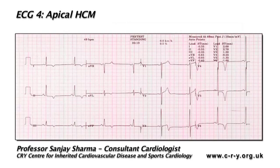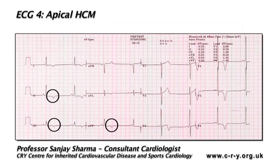This is an ECG of an individual who exercised but had complained of intermittent chest pain. You will recognise immediately that there is evidence of T-wave inversions in 2, 3, AVF, V3 to V6. I would like to draw your attention to the depth of the T-waves in V3 to V6.